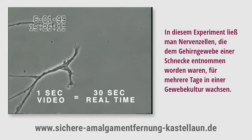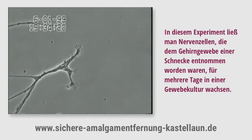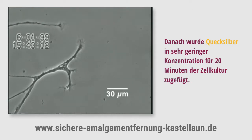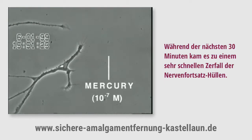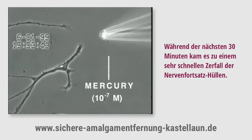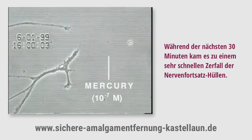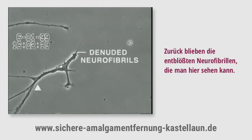In this experiment, neurons also isolated from snail brain tissue were grown in culture for several days, after which very low concentrations of mercury were added to the culture medium for 20 minutes. Over the next 30 minutes, the neurite membrane underwent rapid degeneration, leaving behind the denuded neurofibrils seen here.